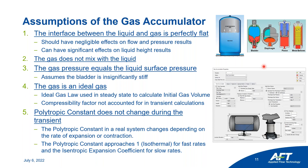The last thing I want to discuss are the assumptions the gas accumulator feature makes so that you can best model your gas accumulator and understand what's going on. The first assumption is that the interface between the liquid and the gas is perfectly flat. This should have negligible effects on flow and pressure results, however it can have significant effects on the graphed liquid height results. Secondly, the gas does not mix with the liquid — we assume the transient is fast enough that there's no gas mixing into the water and going down into your piping system, and that the gas stays separate from the liquid at all times.